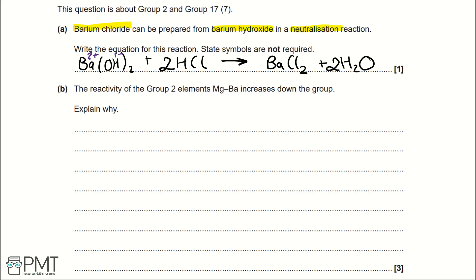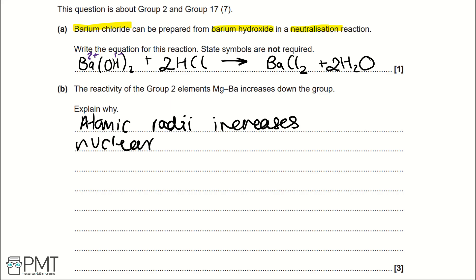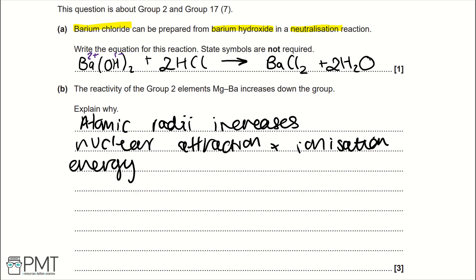Part B: the reactivity of Group 2 elements, magnesium to barium, increases down the group. Explain why. This is a very common 3-mark question with a set answer. Atomic radii increases down the group, nuclear attraction decreases, and ionization energies decrease. To get the three marks you need these three bullet points.